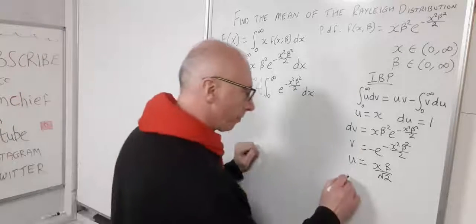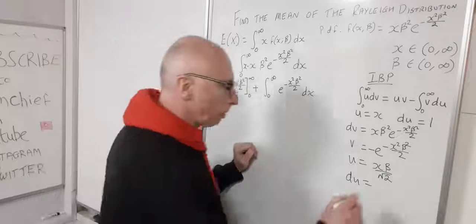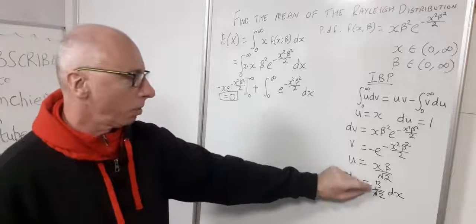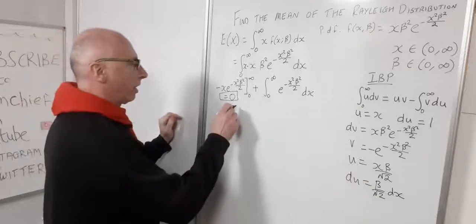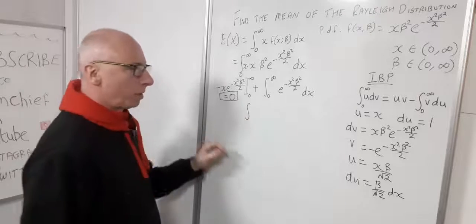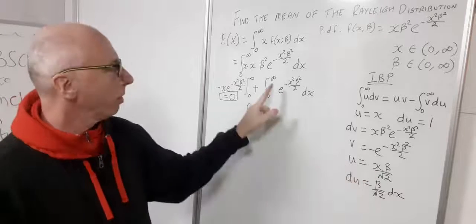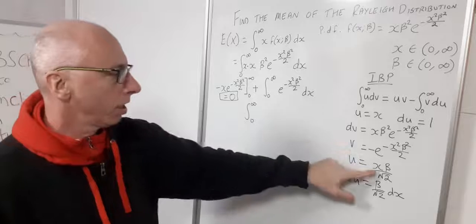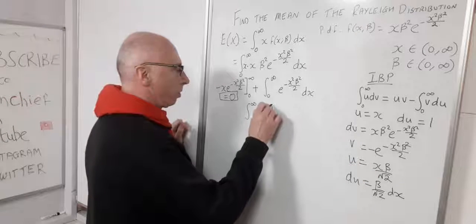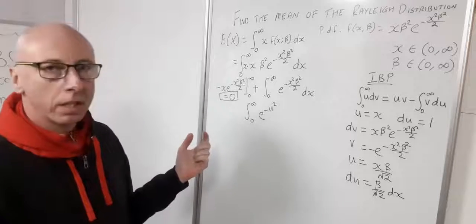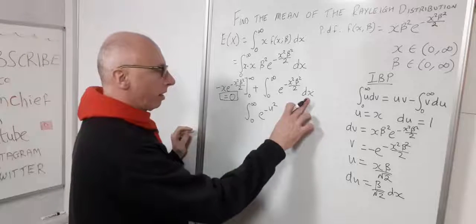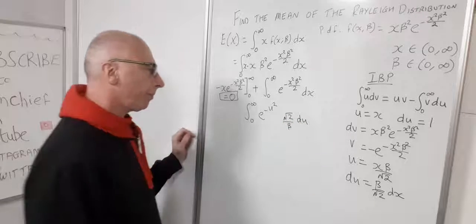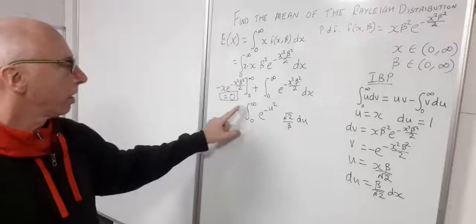Taking the derivative, du equals beta over root 2, dx — so dx equals root 2 over beta, du. At x equals 0, u equals 0, and at infinity, u is also infinity, so the limits stay the same. The integral becomes from 0 to infinity of e to the minus u squared, times root 2 over beta, du. The constant root 2 over beta comes out in front.